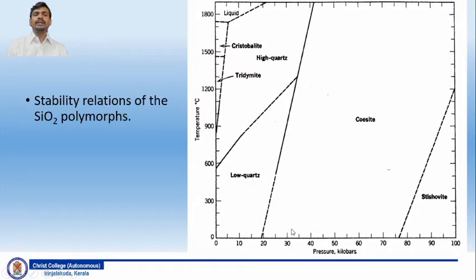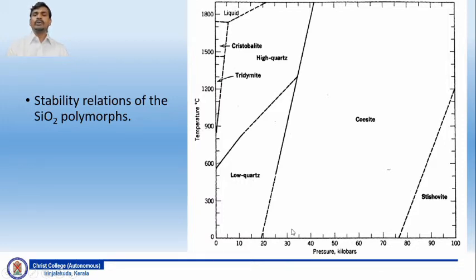Here, I have shown a stability relationship of SiO2 polymorphs, which are named as different terms. In the x-axis, you can see that pressure is shown in kilobars, and in the y-axis, what we have shown is the temperature in degrees Celsius. From this, you can easily make out that the low temperature, high pressure polymorph of silica, that is SiO2 or quartz, is stishovite.